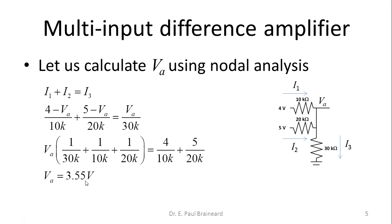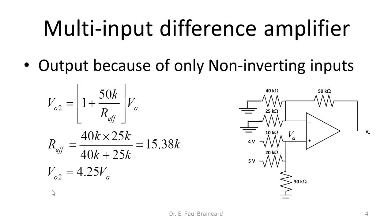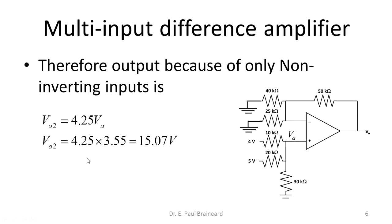Now substitute this value of 3.55V in this expression V02. Therefore, the output voltage because of the non-inverting inputs 4V and 5V is 15.07V.